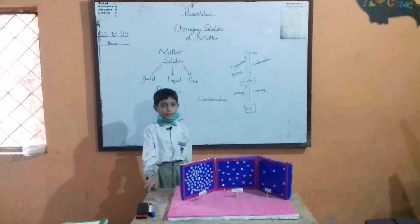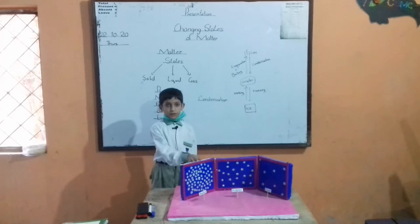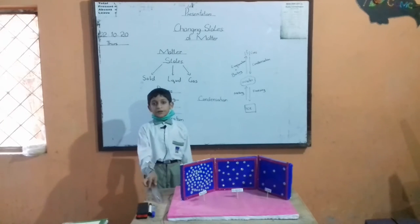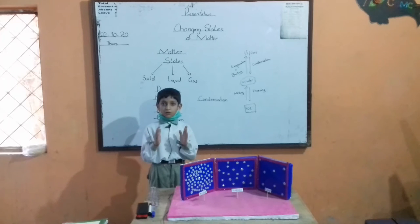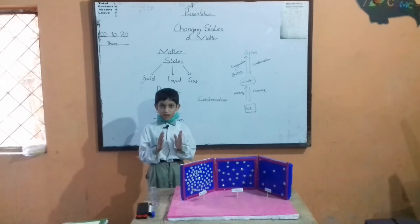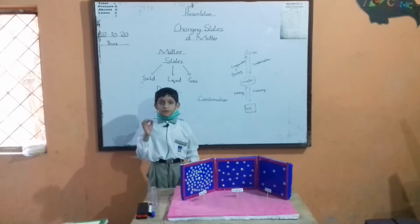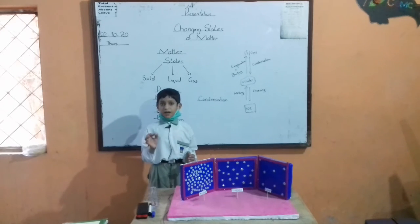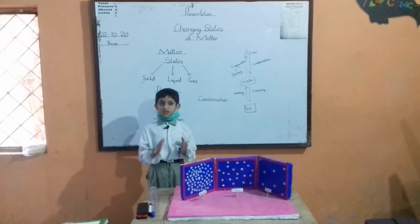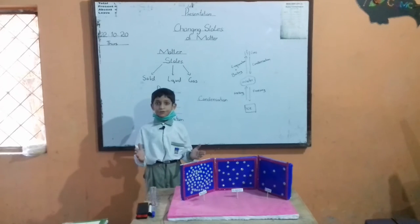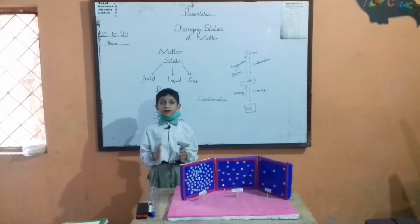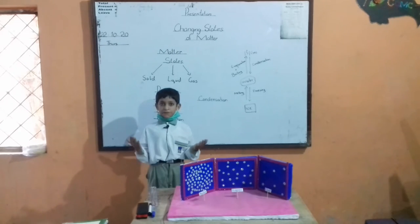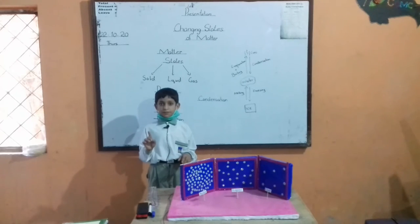Now I will tell you about liquid. Liquid tiny particles are close to each other. They have weak attractive force than solid. They have no fixed shape, but they have fixed volume. We cannot compress them.